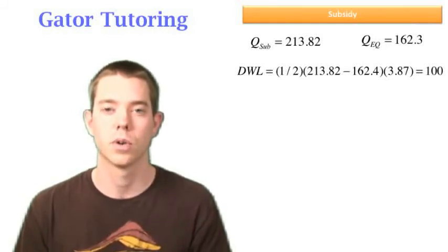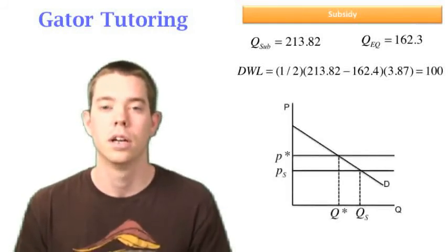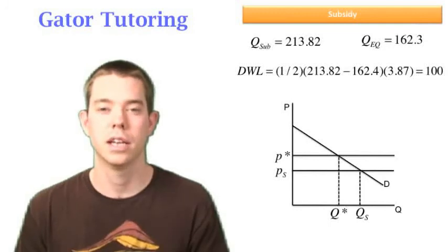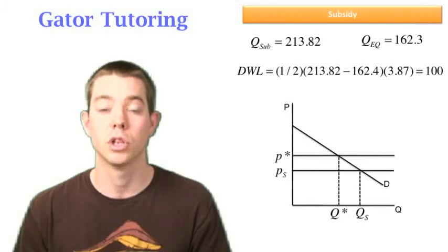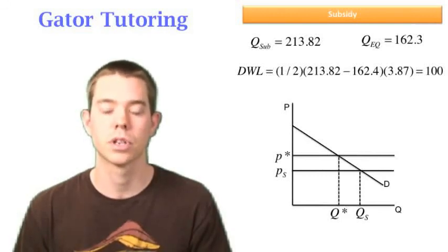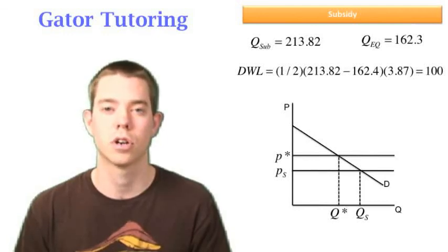So let's take a look at a graph to see what's going on here. In the case of a subsidy, P star is higher than the price of the subsidy. So that's saying that we are going to be selling more units than we should be selling because there's a subsidy and that makes sense. So we're selling QS. We should be selling Q star. The deadweight loss is equal to that triangle, that red triangle.